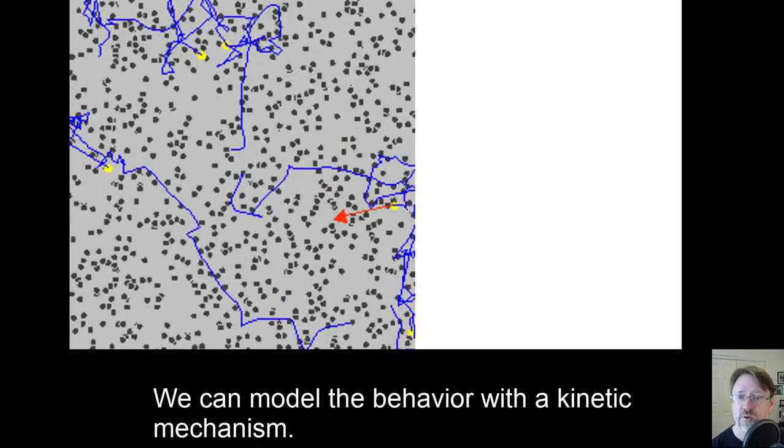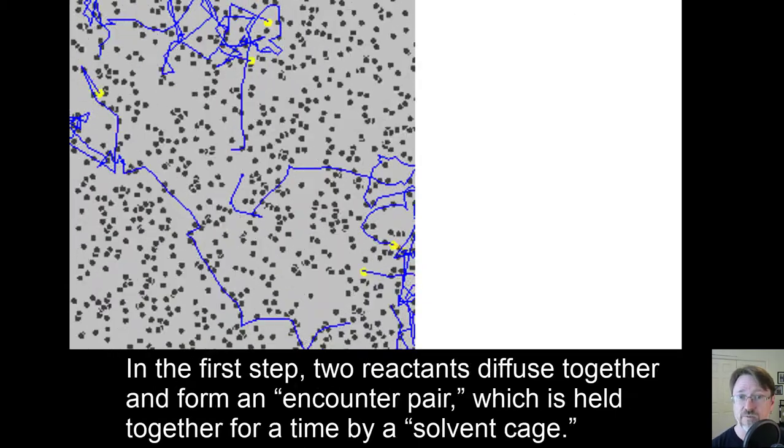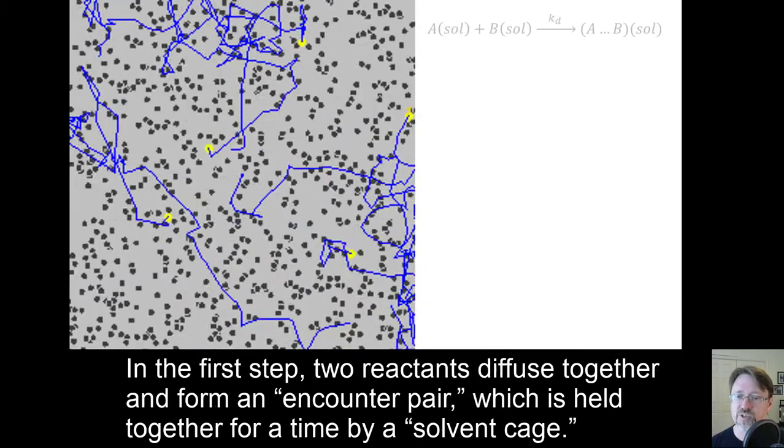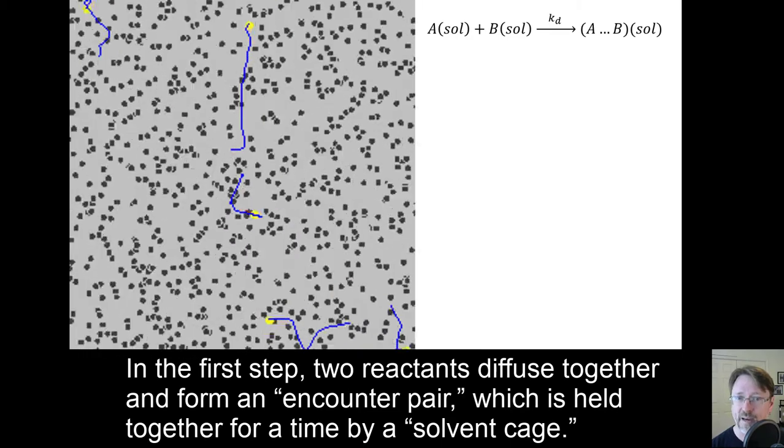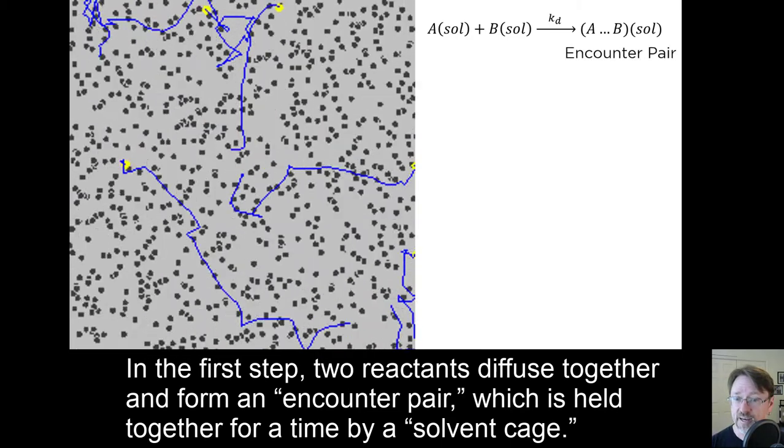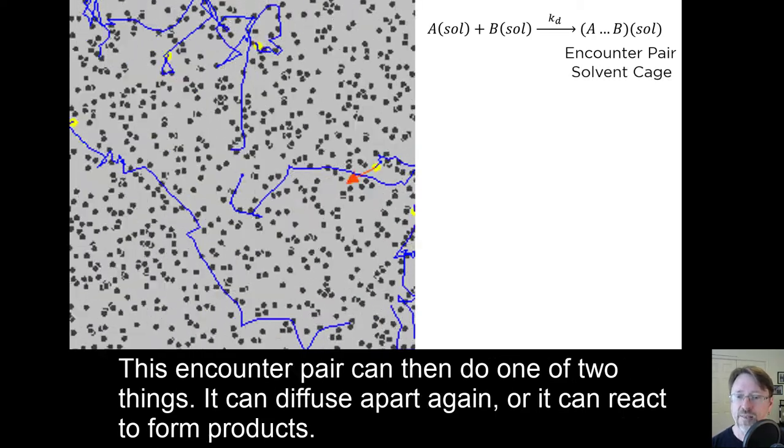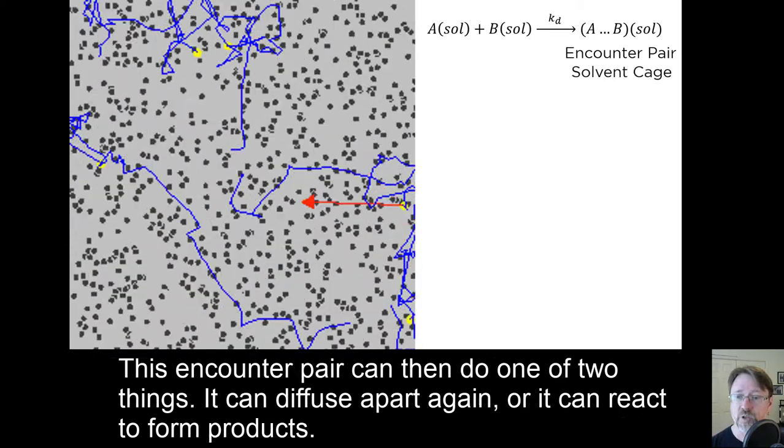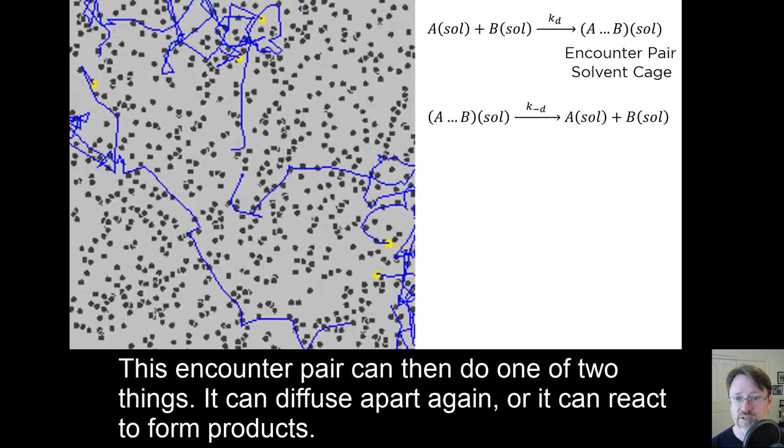We can model the behavior with a kinetic mechanism. In the first step, two reactants diffuse together and form an encounter pair, which is held together for a time by a solvent cage. This encounter pair can then do one of two things: it can diffuse apart again, or it can react to form products.